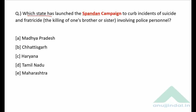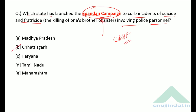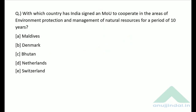The next question asks which state launched the Spandhan campaign to curb incidents of suicide and fratricide involving police personnel. In CRPFs and other CAPFs, a significant rise in suicide and fratricide cases was observed, and to reduce this, the Spandhan campaign was launched. This has been covered in detail in a separate session.